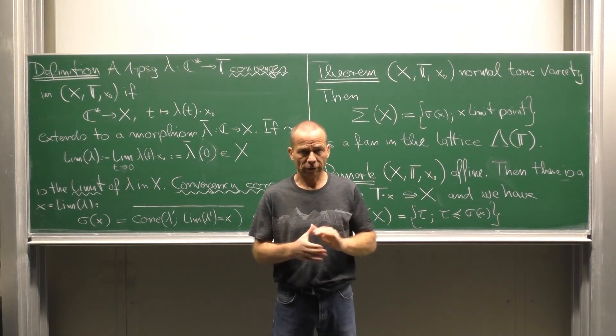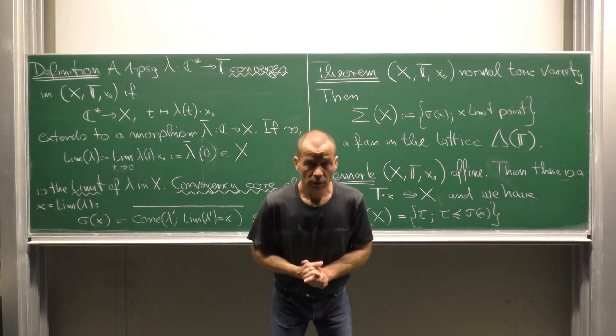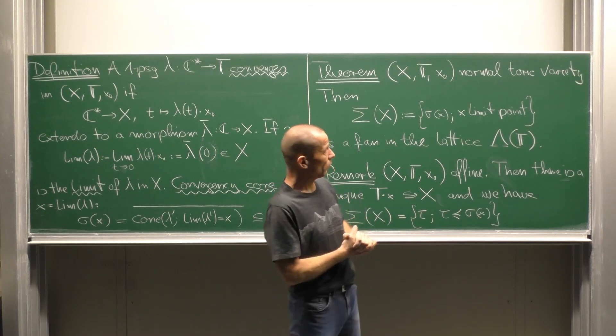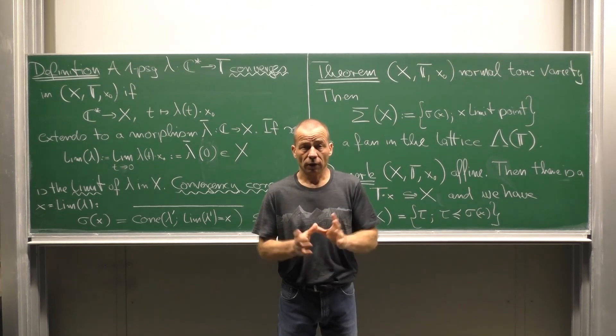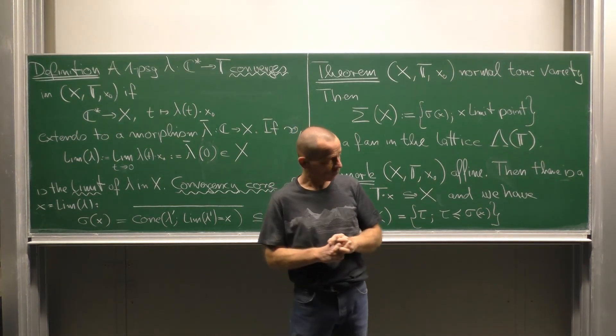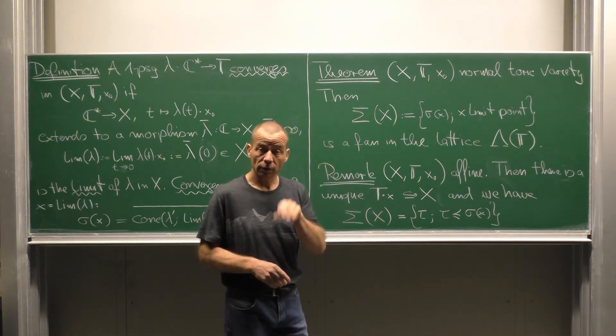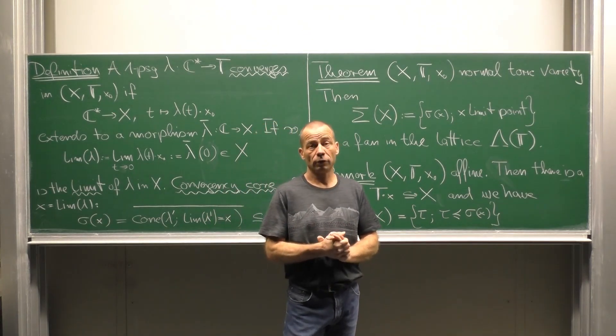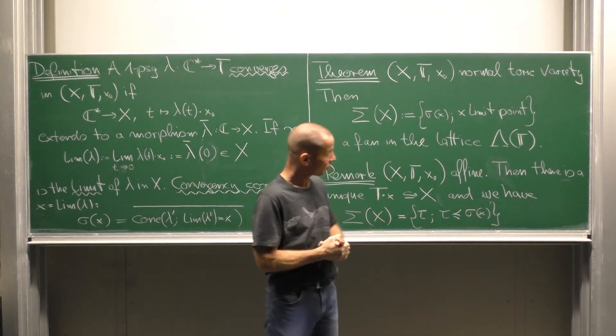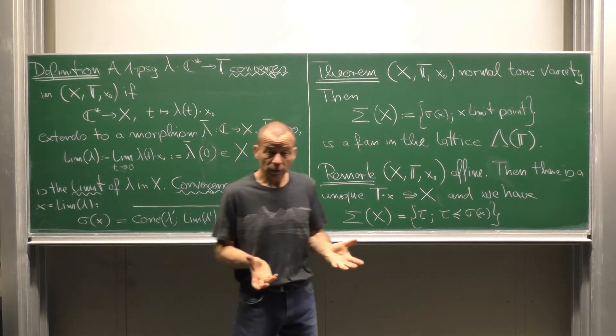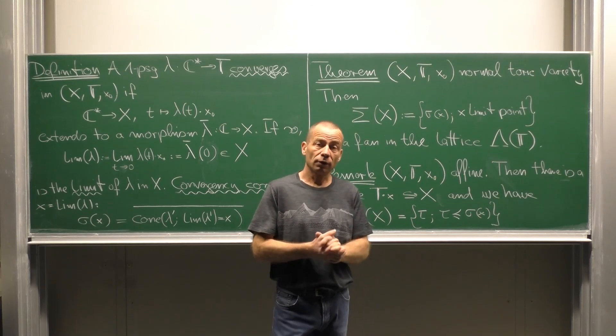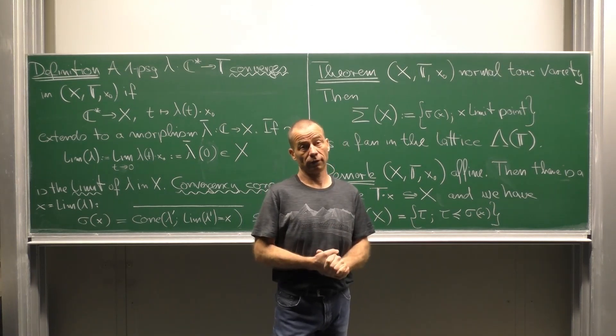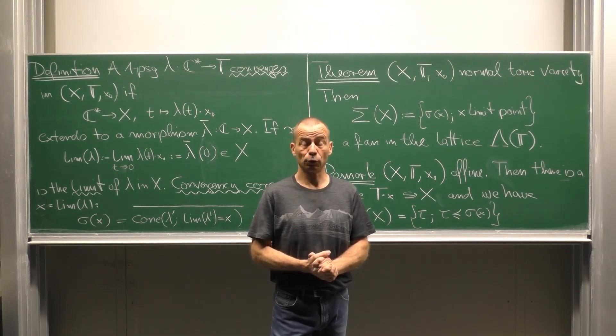So x, if it is normal, is a union of affine toric varieties. This is a consequence of an important theorem of Sumihiro. Once we know this, a good part of the work is reduced to the affine case. See you in the next unit.